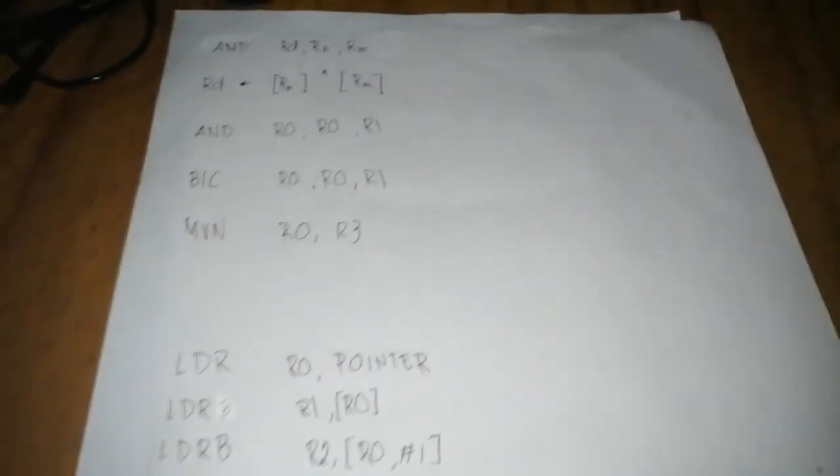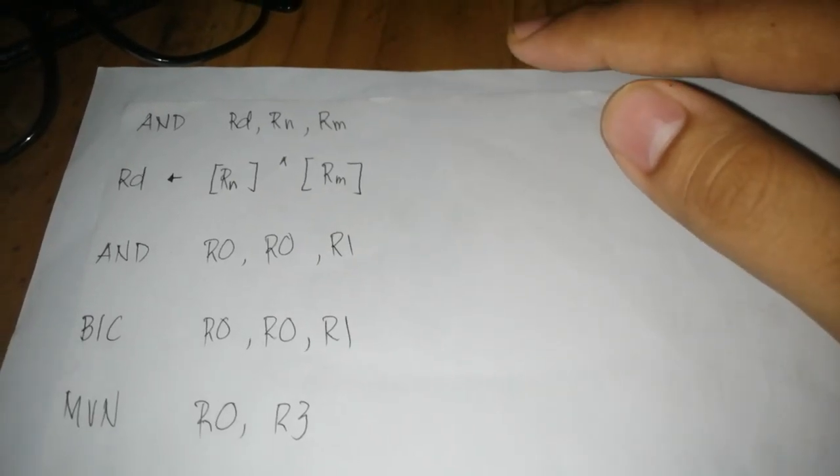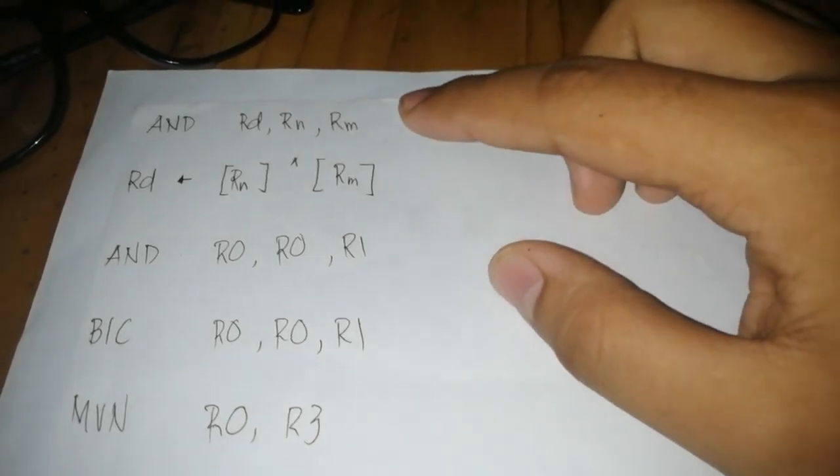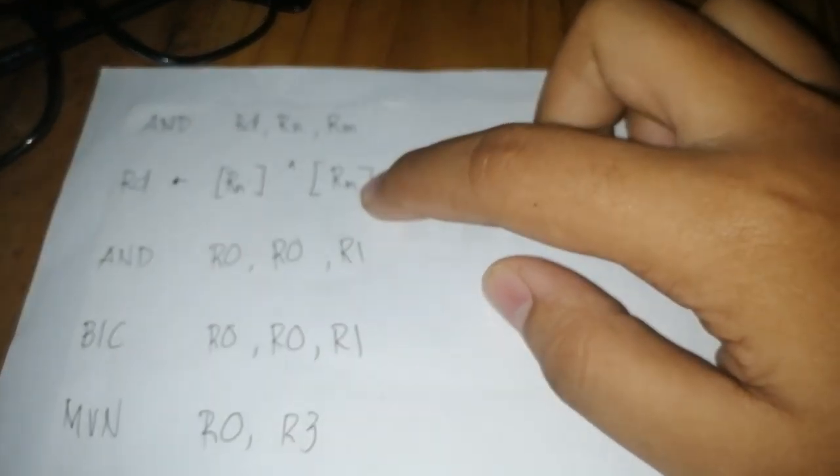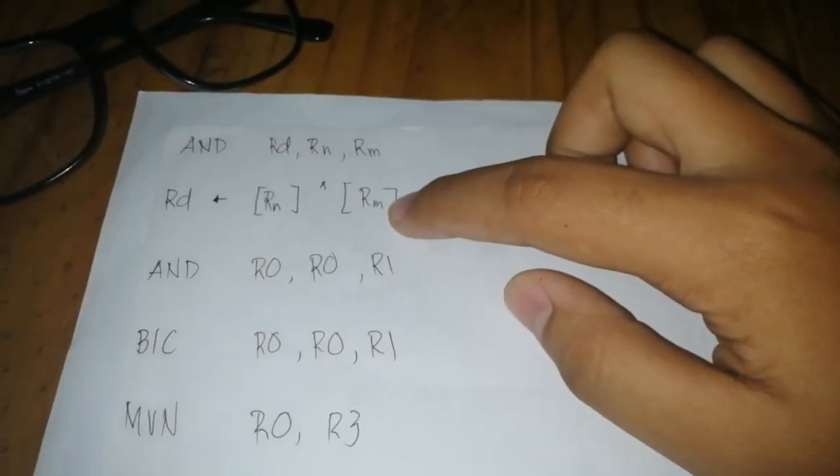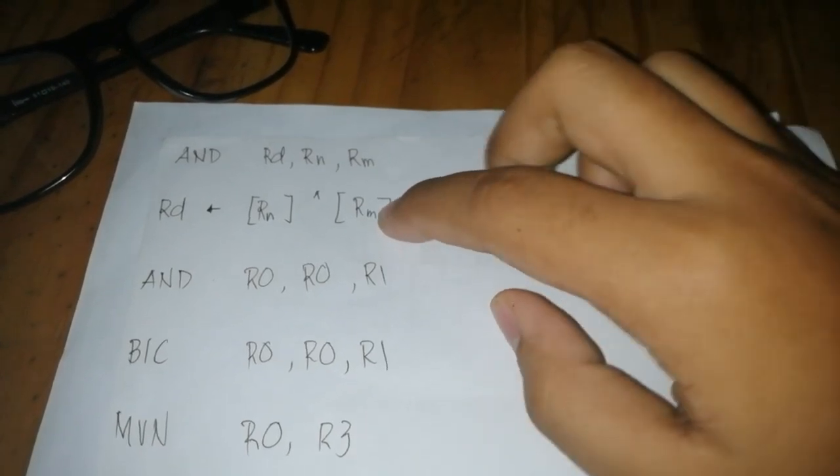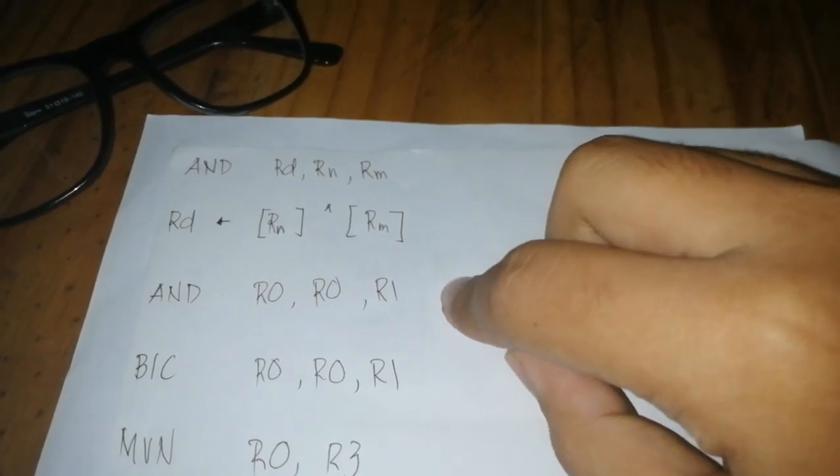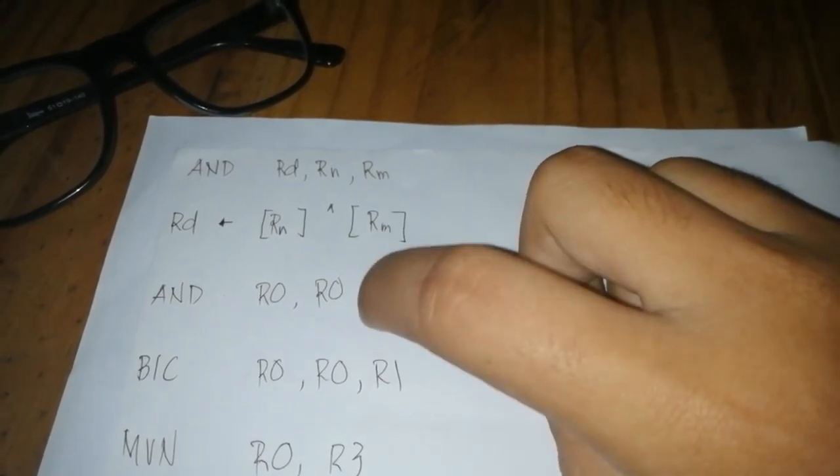So next I will show you a logical instruction. Here you will see an AND instruction. AND is multiplication, where RN and RM will be multiplied to each other, and the value of them will be put in R0. So here, R0, R1.